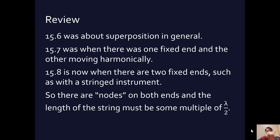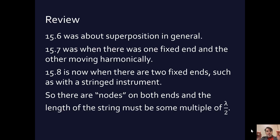The length of the string is going to have to be some multiple of lambda over 2, where lambda is the wavelength. A full wavelength of a sine wave has an up and a down portion, so half of it — just the up part — looks like projectile motion. The length of the string corresponds to half a full wavelength, and it could be a multiple of that: two half-wavelengths, which is one wavelength, or three, or four. The length of the string is some multiple of lambda divided by two.